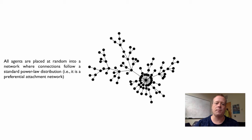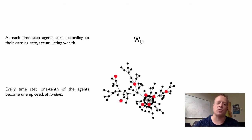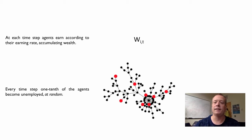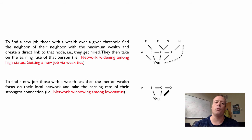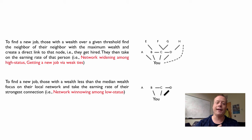At each time step, agents earn wealth according to their earning rate, and every time step one-tenth of agents become unemployed — we set their earning rate to zero, and they search for a new job. Those with wealth over a given threshold find the neighbor of their neighbor with maximum wealth and create a link to that node — they get hired. This can be called network widening among the high status, getting a new job via weak ties. On the other hand, lower socioeconomic status individuals collapse their network — they don't search very much, they just find the friend with the highest wealth and take their job.